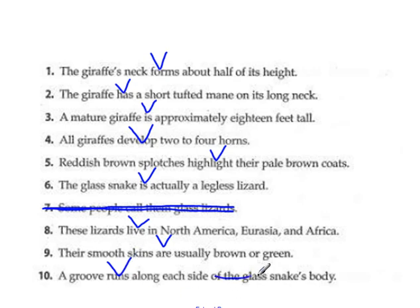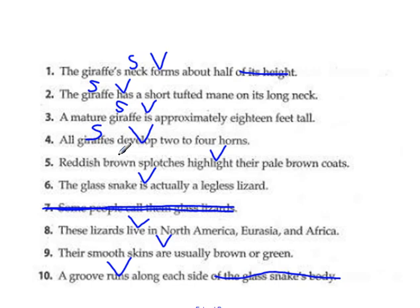We have a little 'of' here and up here to get rid of — might have missed another one, we'll come across. So who or what forms? The neck forms. Who or what has? The giraffe has. Who or what is? The giraffe is. Who or what develop? The giraffes develop. What highlight? The splotches. What is? The snake. Who live? The lizards. What are? The skins. What runs? A groove.